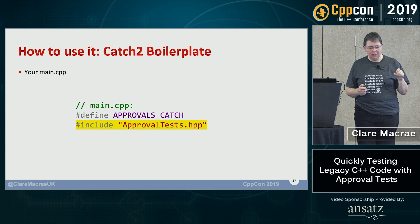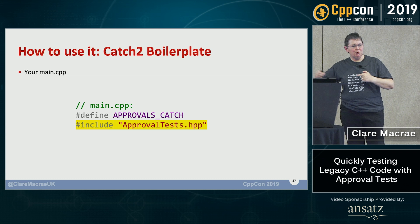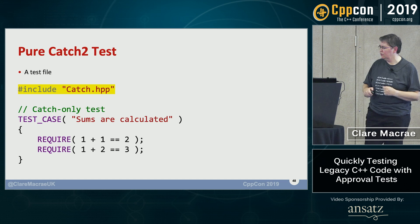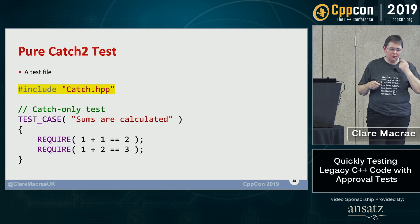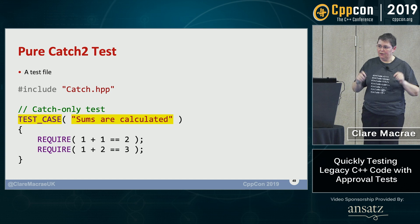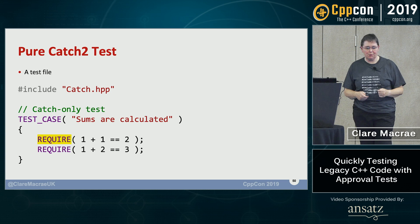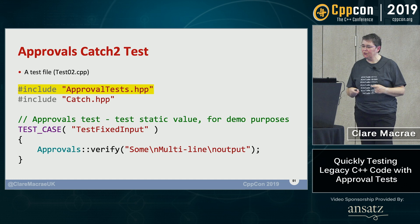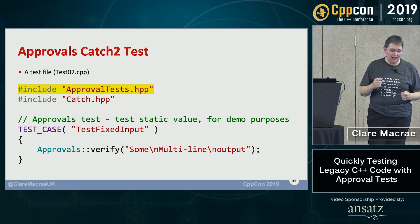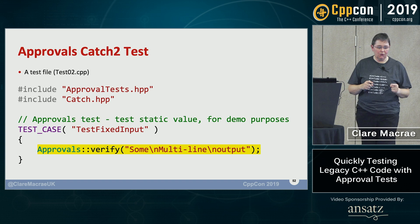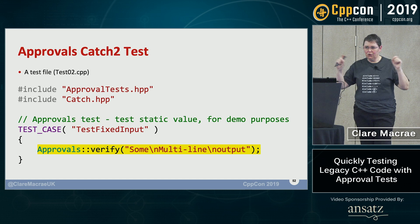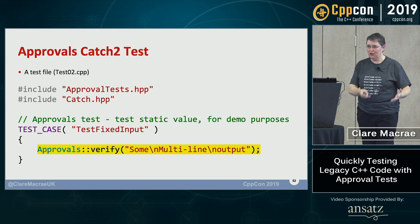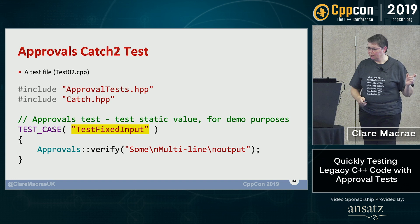That's a relatively slow file to compile, so put your tests in a different file in practice. Here's a Catch 2 test — `TEST_CASE` with a descriptive name, and `REQUIRE` is how Catch spells assert. If we wanted the same thing but with an Approval Tests test inside Catch, we add the Approval Tests header — everything else is the same. But instead of `REQUIRE`, the Approval Tests vocabulary is `verify`: `Approvals::verify(some string)`. My test case is called 'test fixed inputs' and my test file is called test02.